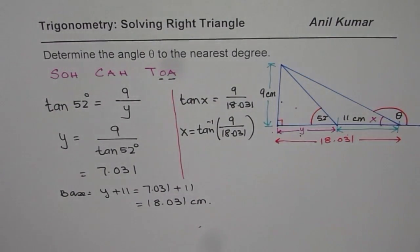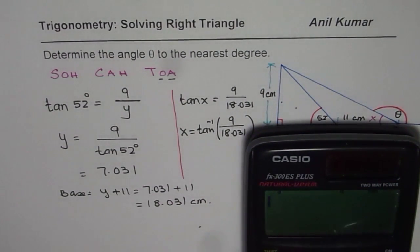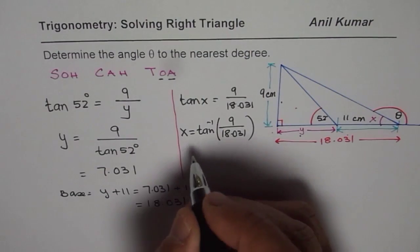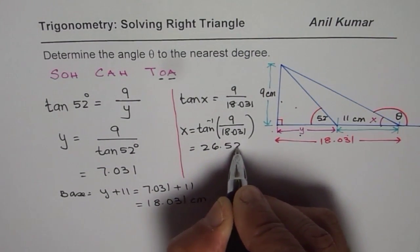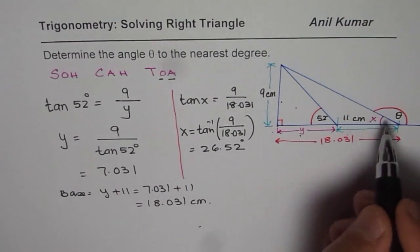So let's find using the calculator. tan inverse of the second function within brackets, 9 divided by 18.031, bracket close, equal to 26.525. That much degrees is the angle x.